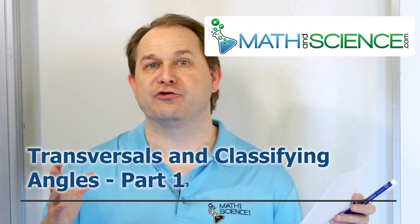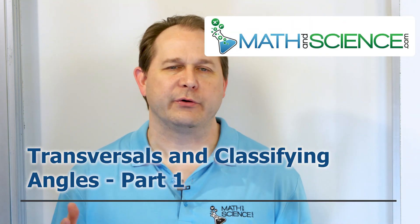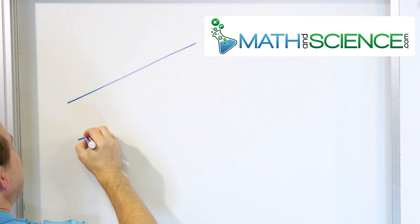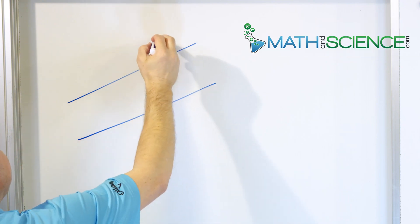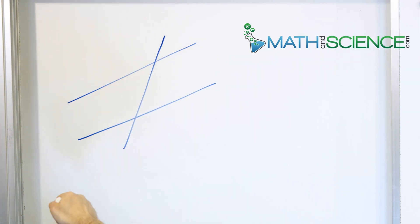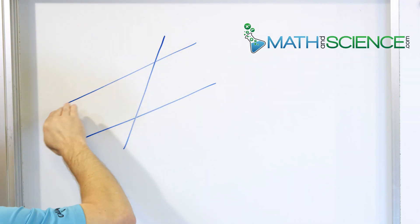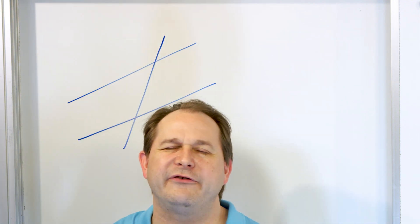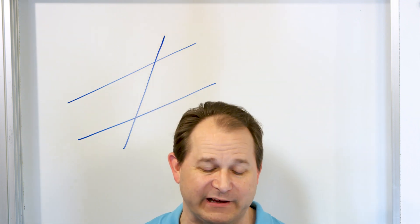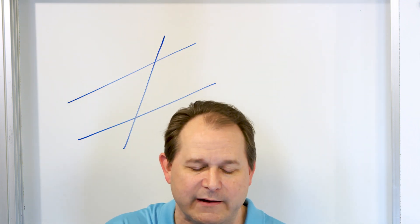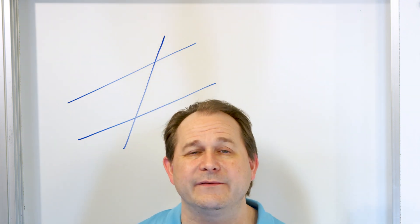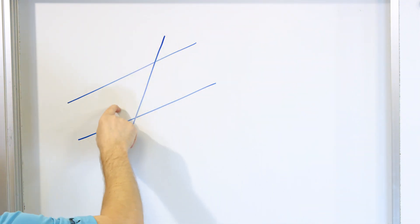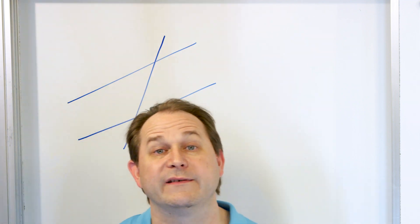In geometry, we have this idea of what we call a transversal. A transversal is when you have two parallel lines and the line that cuts through them at some angle is called the transversal. This kind of arrangement with two parallel lines and some other line that cuts through them comes up so often in math that we actually have an entire lesson on it, with lots of different kinds of angles formed.